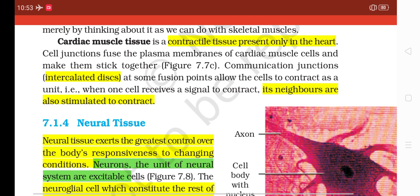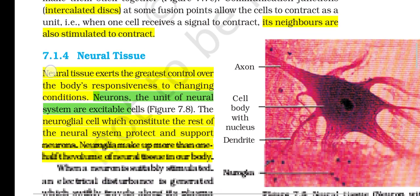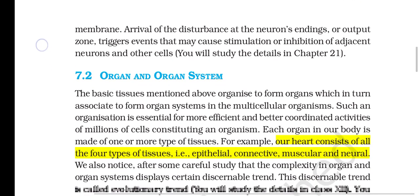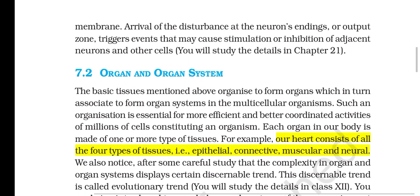Section 7.1.4: Neural Tissue. Neural tissue exerts the greatest control over the body's responsiveness to changing conditions. Neurons, the units of neural systems, are excitable cells. Neuroglial cells, which constitute the rest of the neural system, protect and support neurons; neuroglia make up more than half the volume of neural tissue in our body. When a neuron is suitably stimulated, an electrical disturbance is generated which swiftly travels along its plasma membrane; arrival of the disturbance at the neuron's output zones triggers events that may cause stimulation or inhibition of adjacent neurons and other cells.